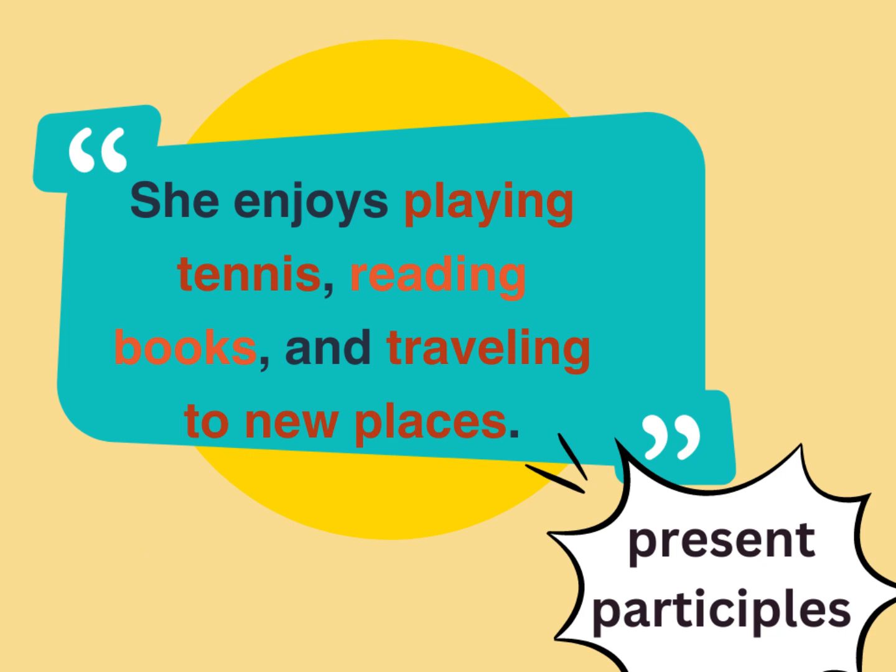Try to study this example sentence: She enjoys playing tennis, reading books, and traveling to new places. The phrases playing tennis, reading books, and traveling to new places — written in red — are all present participles. Thus, this sentence has parallelism.